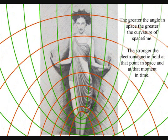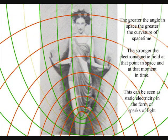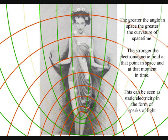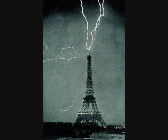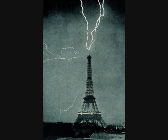This can be seen as sparks of light associated with static electricity. The atoms will even distort the geometry of space-time, creating electrostatic discharge in the form of lightning.